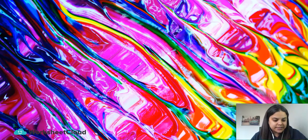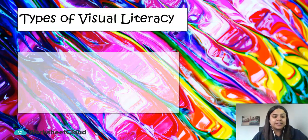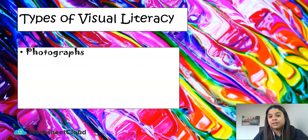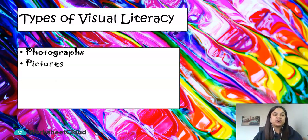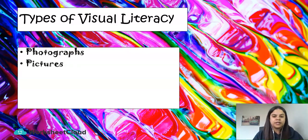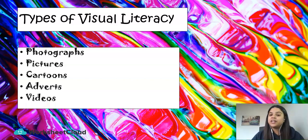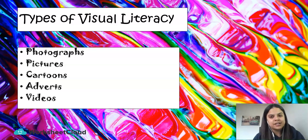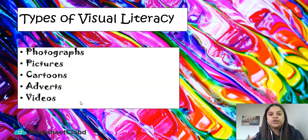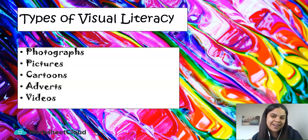The types of visual literacy include photographs, which are like images taken with your phone or camera; pictures, which can be found in a newspaper article, for example; cartoons; adverts; and videos. There are many other types as well, but we are going to look at these few so I can get you into the understanding of how you can use visual literacy, and when you do get an activity, you will know what to look for and how to answer the question.